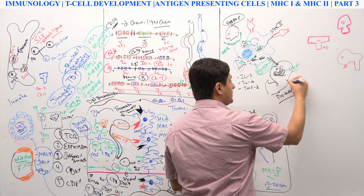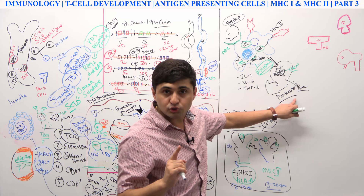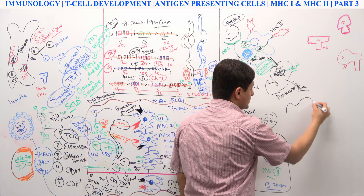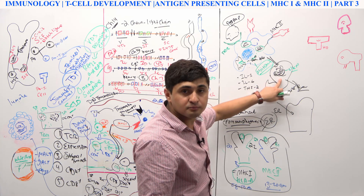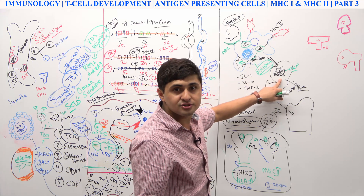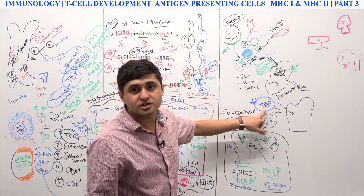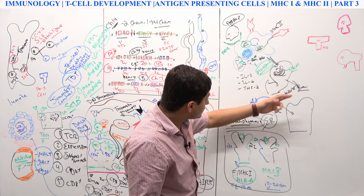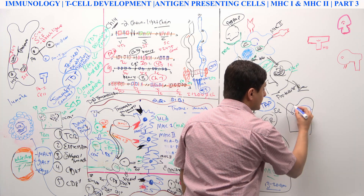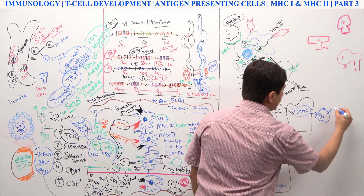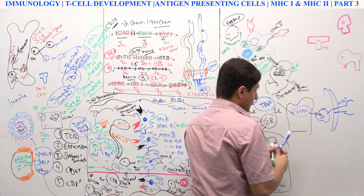The proteasome further degrades those proteins. Those peptide fragments then get transferred into the endoplasmic reticulum by a very important protein called TAP — Transporter Associated with Antigen Processing. TAP basically transfers the antigen peptide into the endoplasmic reticulum, where it gets loaded onto MHC1. From there it goes to the Golgi, then to the cell surface — with the antigen loaded on MHC1.